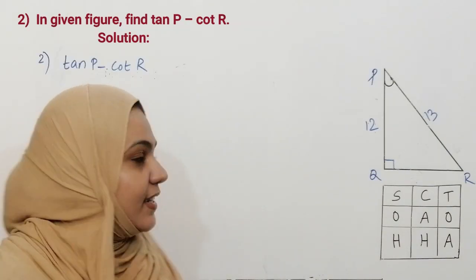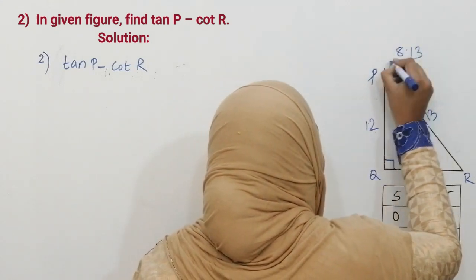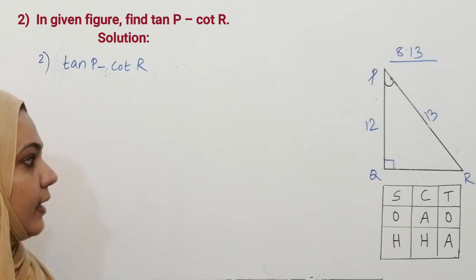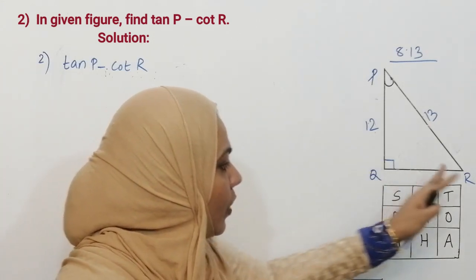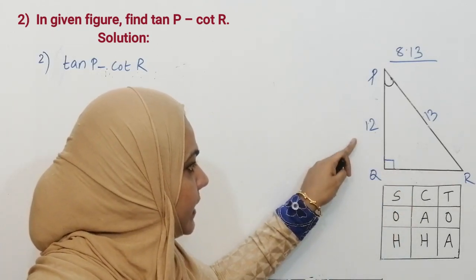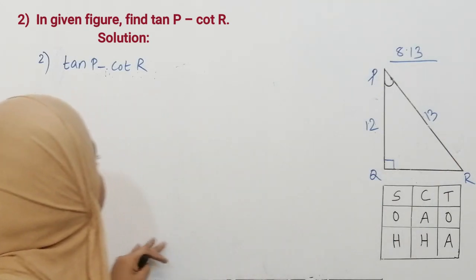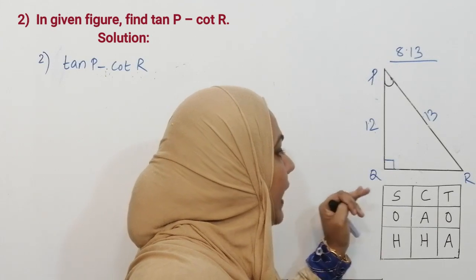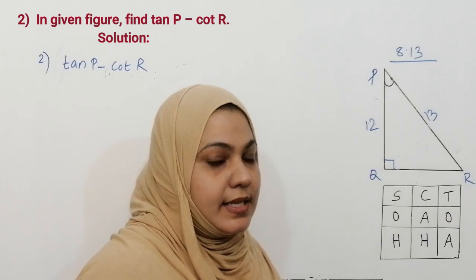Let us start with our second question. In figure 8.13, you have to find tan P minus cot R. In triangle PQR, right angle at Q, PQ is equal to 12 centimeters and PR is equal to 13 centimeters. You have to find tan P minus cot R. We have to find the third side of this triangle because only two sides are given.